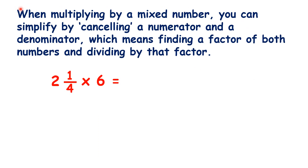Here's a trick which you can use only when you're multiplying by a mixed number. You can simplify by cancelling a numerator and a denominator, which means finding a factor of both numbers and dividing by that factor. This sounds confusing, so let's break it down with an example. For example, we have two and a quarter times six.